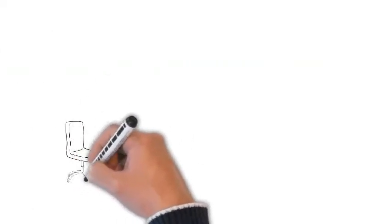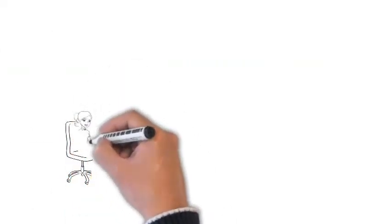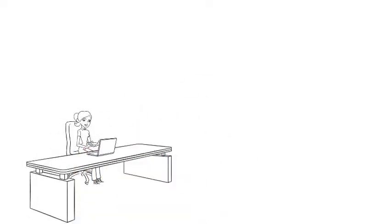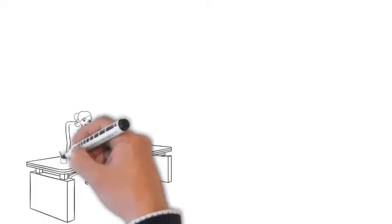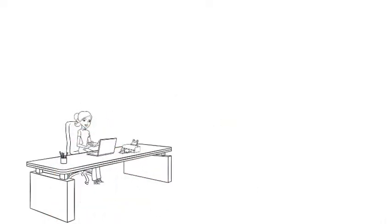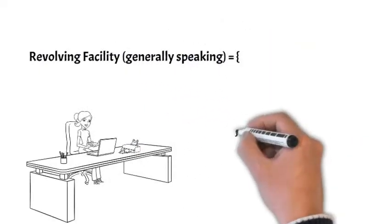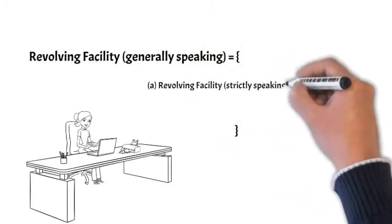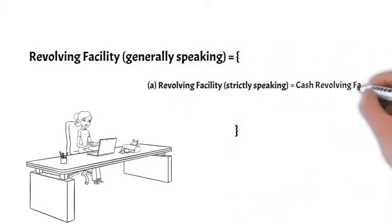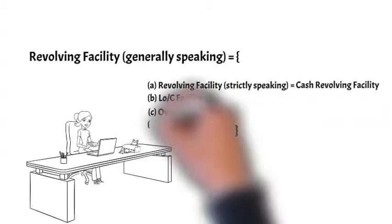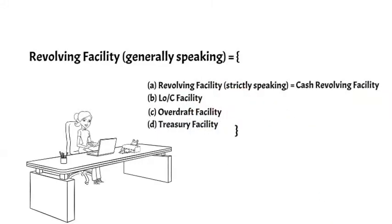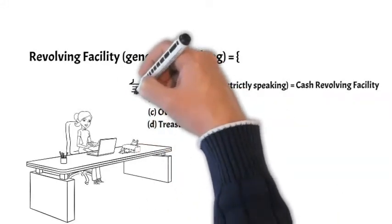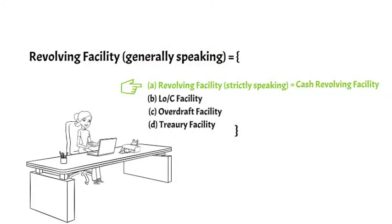One short clarification right at the beginning. When legal documents including facilities agreements, term sheets and syndication documents, especially those based on the standards of the loan market association, refer to a revolving facility, what they have in mind is an umbrella term for a facility that can take the form of a revolving facility strictly speaking, also referred to as cash revolving facility, letter of credit facility, an overdraft facility or a treasury facility. For the purpose of this video, when we talk about a revolving facility we are referring to a revolving facility strictly speaking.